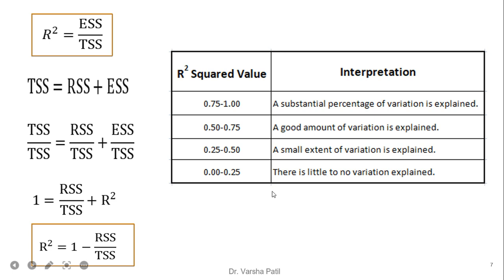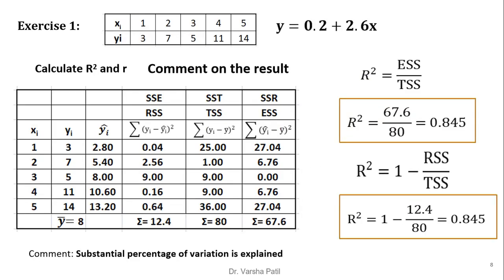R-squared results vary from 0 to 1, or 0 to 100%. In this example, we need to find R-squared first, then find the coefficient of correlation R using R-squared, and also verify using the Pearson formula. The regression equation is given, with β₁ equal to 2.6 and a positive slope. After performing all calculations, R-squared equals ESS divided by TSS, giving us an R-squared of 0.845.